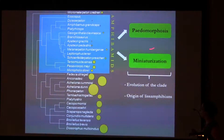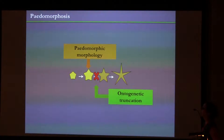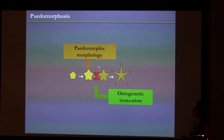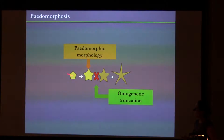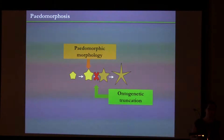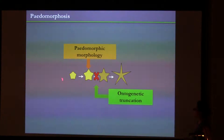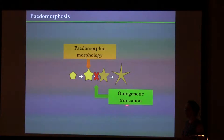The study of both patterns is quite relevant. So what do I mean by pedomorphosis? Pedomorphosis is the morphological pattern where the adults of a species retain the juvenile traits of the ancestor, and pedomorphosis is the outcome of mechanisms that lead to ontogenetic truncation.